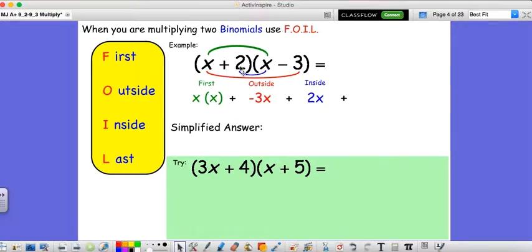And then finally you do your last term, so the last term in each binomial. So you'll do your 2 times negative 3. And then what you do is you add all these pieces up individually and you simplify. So our simplified answer is just going to be x times x, which is x squared, minus 3x plus 2x, which is negative x, minus 6.